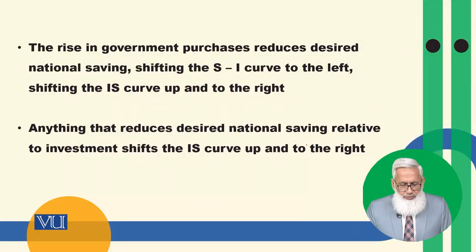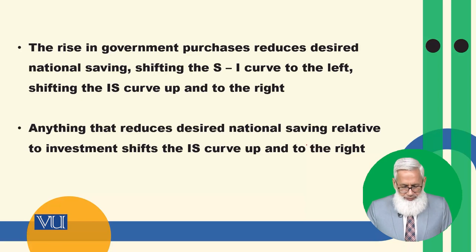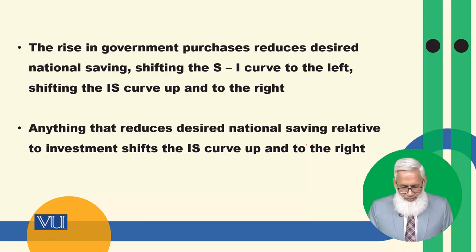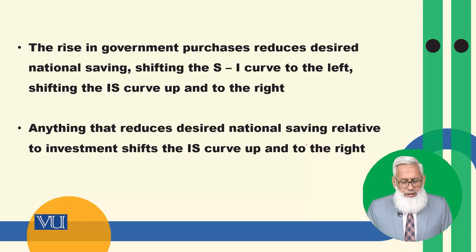Government purchases reduce desired national savings, shifting the S-I curve to the left and shifting the IS curve up and to the right. Anything that reduces desired national savings relative to investment shifts the IS curve up and to the right.